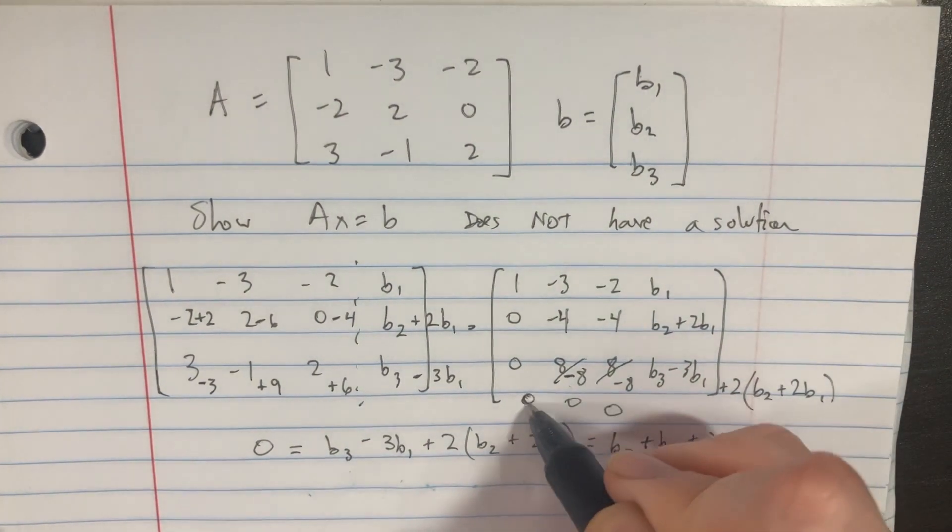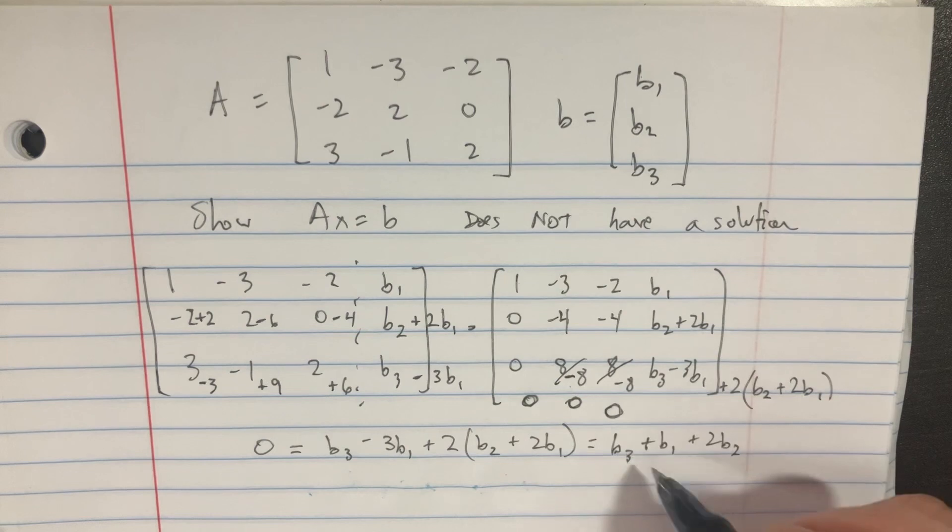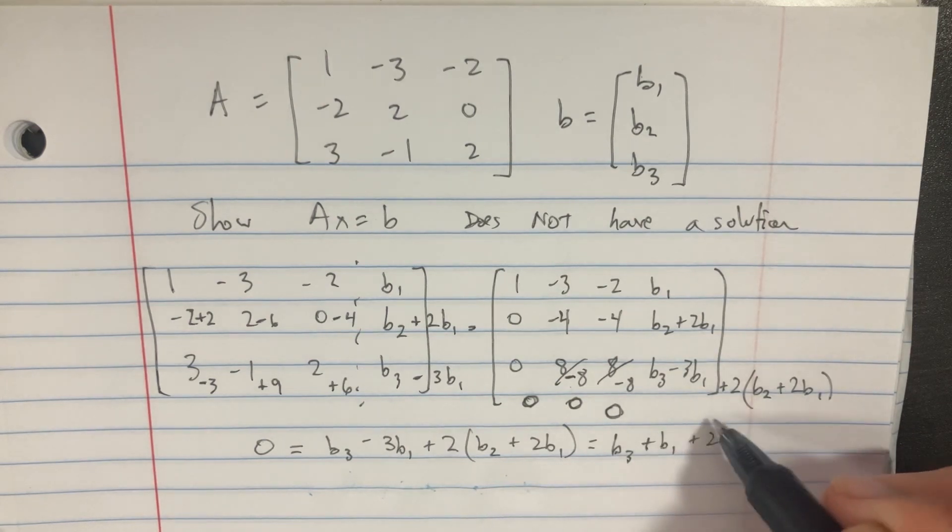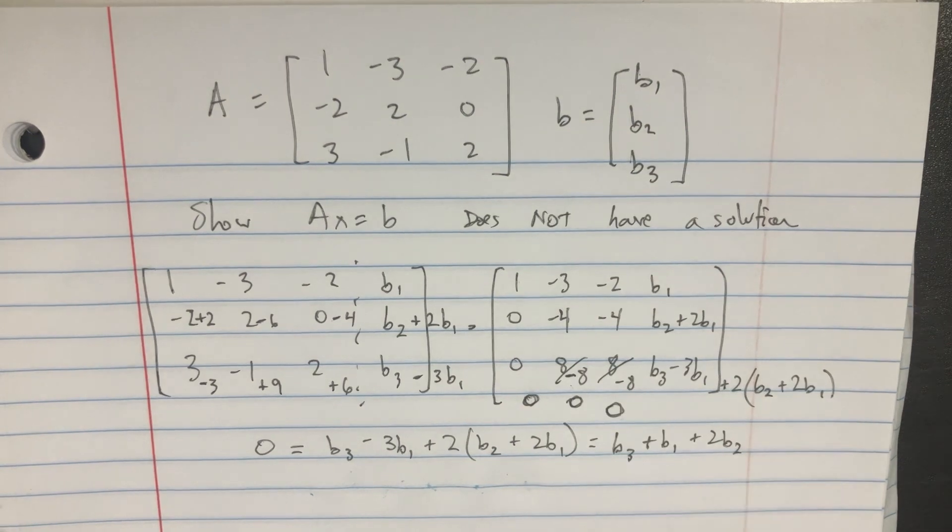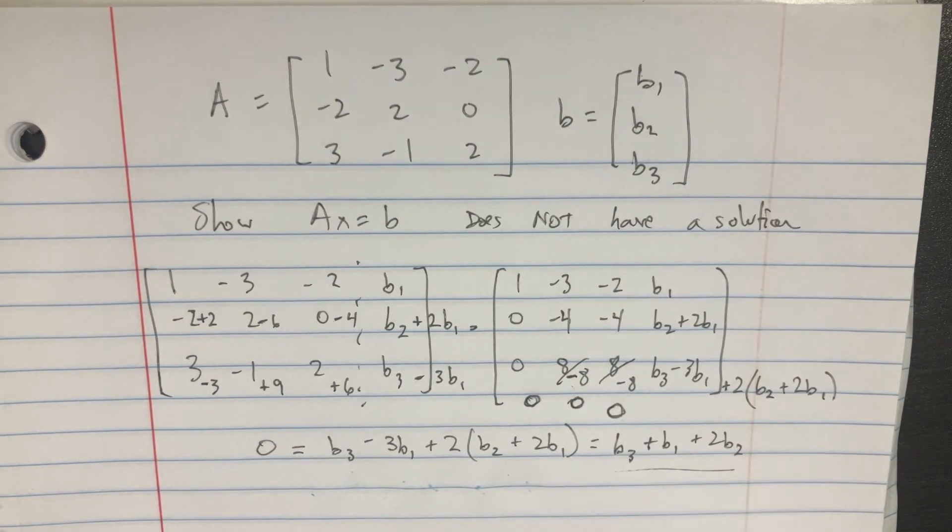So as you know, if you have a matrix with 0, 0, 0, and then it doesn't matter what number you have over here, that would be no solution. So that's the expression that would represent it. Thank you.